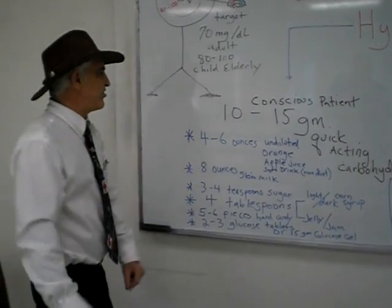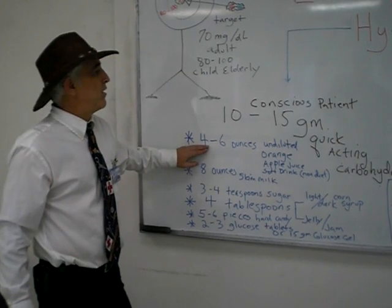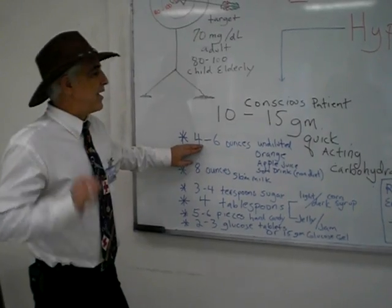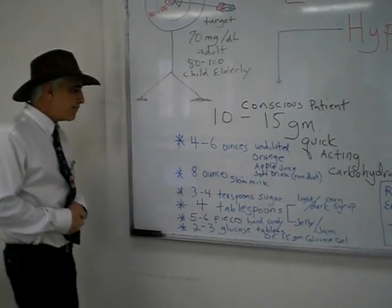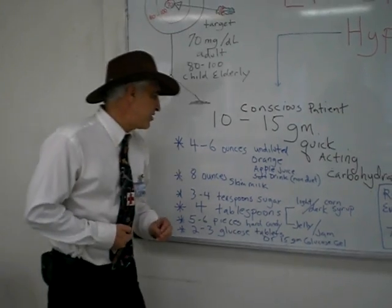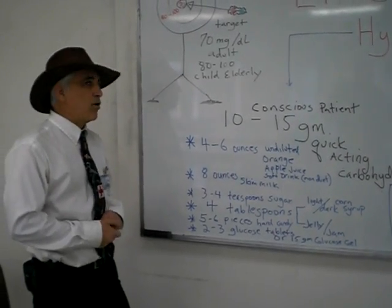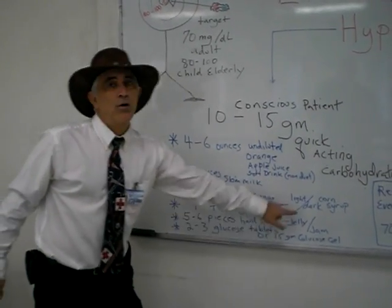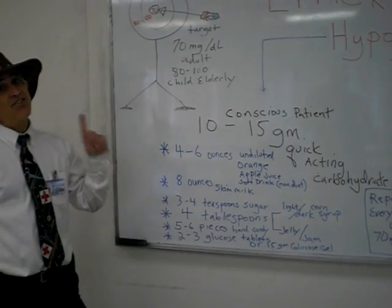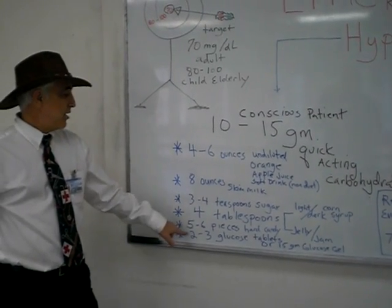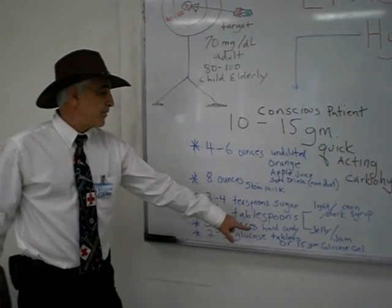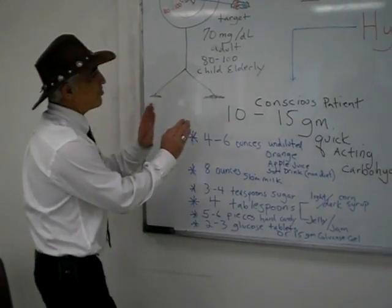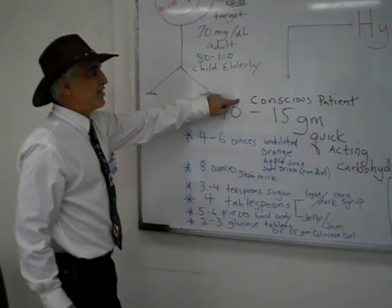To review: four to six ounces of undiluted orange juice, apple juice, or a non-diet soft drink; eight ounces of skim milk; three to four teaspoons of sugar; four tablespoons of corn syrup or jelly/jam; five to six pieces of hard candy; two to three glucose tablets; or 15 grams of glucose gel. That's our treatment for the conscious patient.